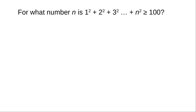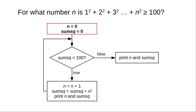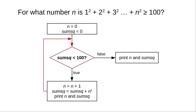Let's re-examine the example of finding the value of n for which the sum of squares up to and including n is greater than or equal to 100. Here's our flowchart. Start by setting n and the sum of squares to 0. If the sum of squares is less than 100, add 1 to n, add n squared to the sum, and print them to see how things are progressing. Then loop back to the condition. Eventually, the sum of squares will not be less than 100 — we will have achieved our goal and can print the answer.